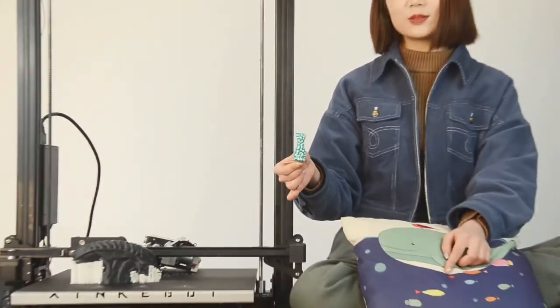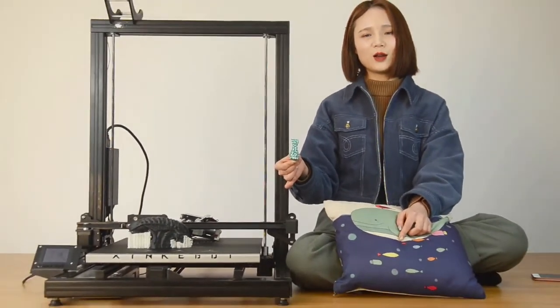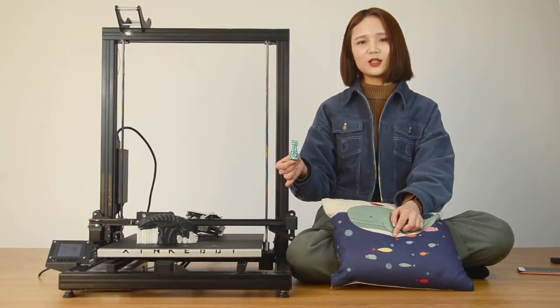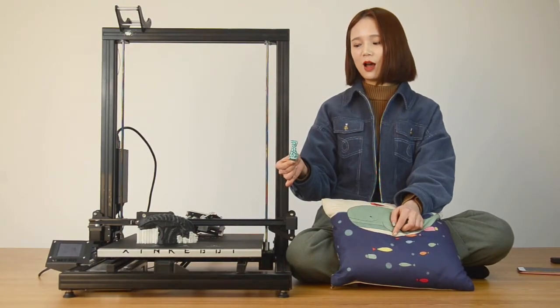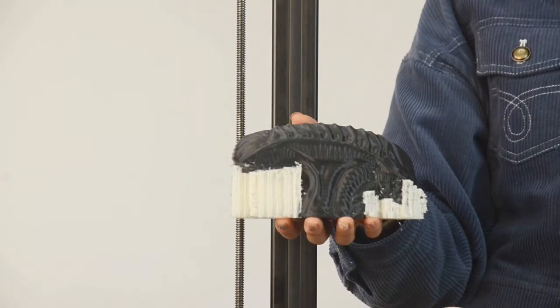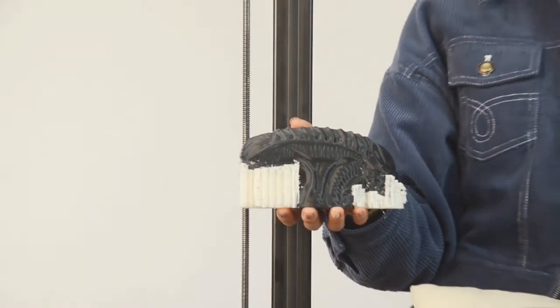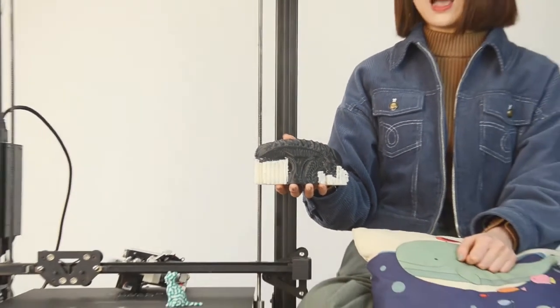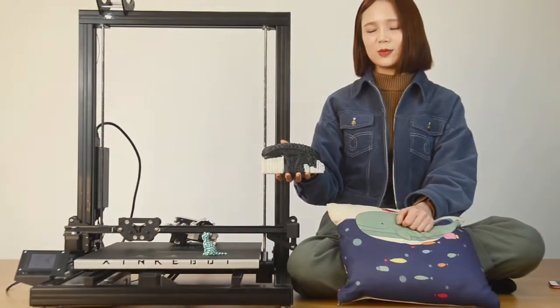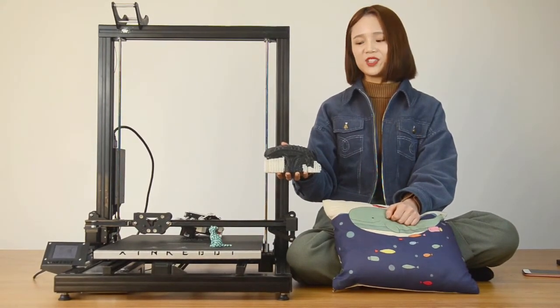In practice, it's recommended to use for models that have complicated designs and require a different support material such as PVA, a kind of water-soluble material. This kind of models usually have intricate parts that can be easily damaged when you remove the supports if you use only one kind of filament.